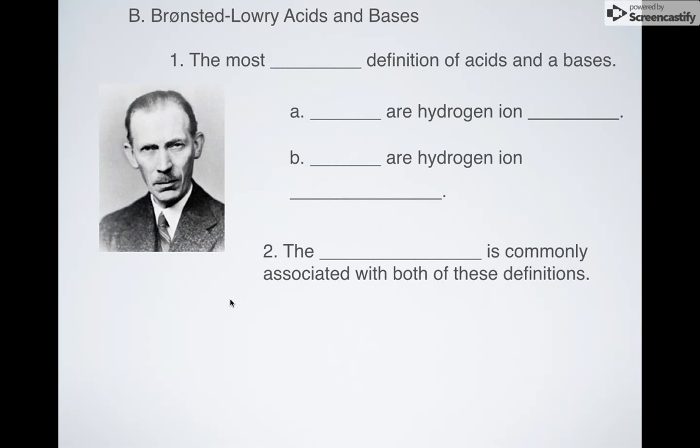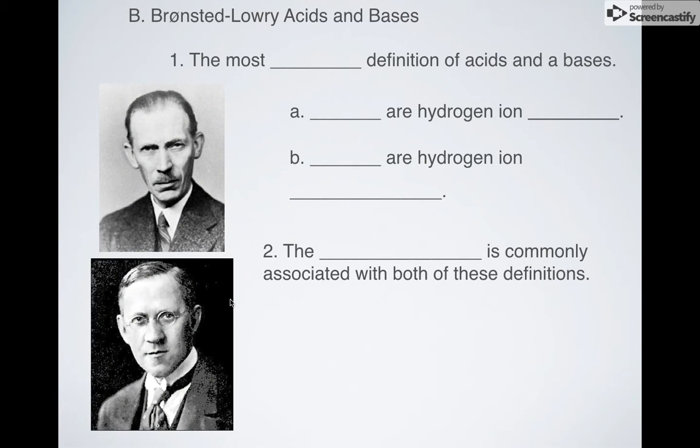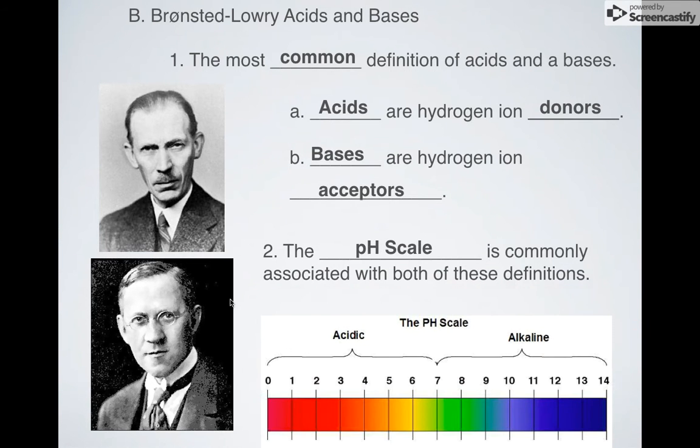Okay let's talk about the next one. So we have Brønsted and Lowry and their co-definition of acids and bases. It's the most common definition of acids and bases. Even in bio you'll probably see this one. And so all you need to know are that acids donate hydrogen ions and bases accept hydrogen ions. And both of these definitions, the Brønsted-Lowry and the Arrhenius definition, are commonly associated with the pH scale. And remember pH says that 0 to just below 7 is acidic and 14 to just above 7 is basic or alkaline.